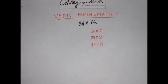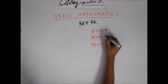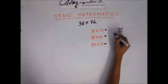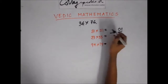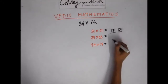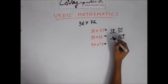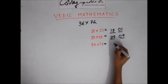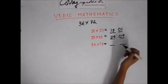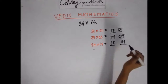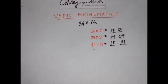Let's quickly check the answers. For 81 × 21: last digits give 01, first part is 8 × 2 + 1 = 17, so 1701. For 73 × 33: 3 × 3 = 9, 7 × 3 + 3 = 24, so 2409. For 99 × 19: 9 × 9 = 81, 9 × 1 + 9 = 18, so 1881. We solved all three in around 10 seconds.